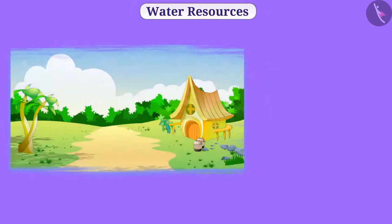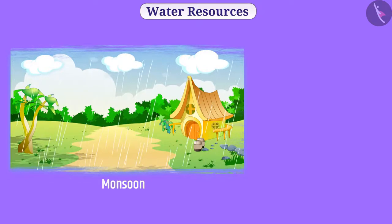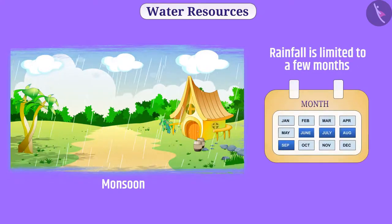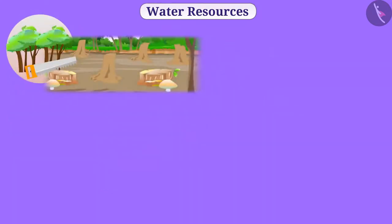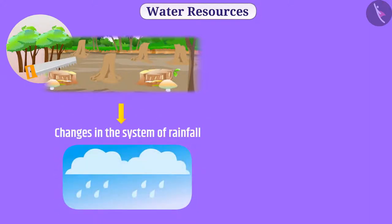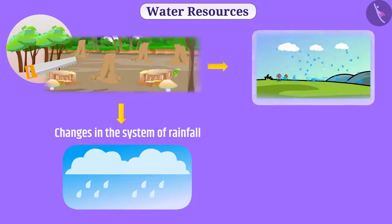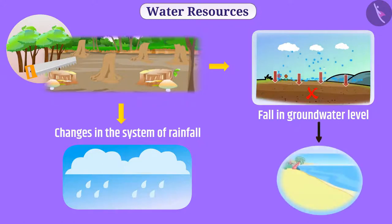In our country, rainfall mainly depends on the monsoon, so the duration of rainfall is limited to a few months. Due to deforestation, there are changes in the system of rainfall. Because of the absence of trees, rainwater cannot go into the ground — it drains and merges into the sea.